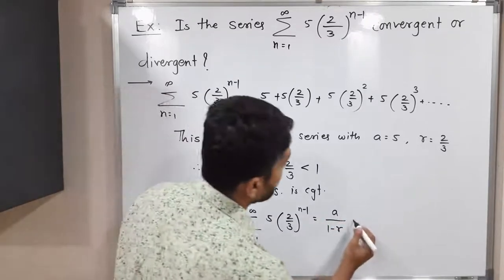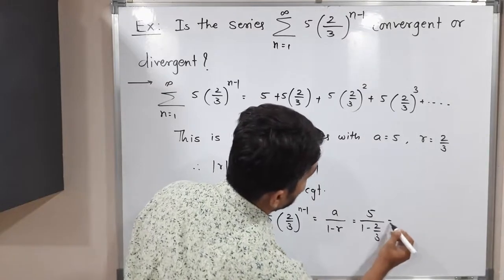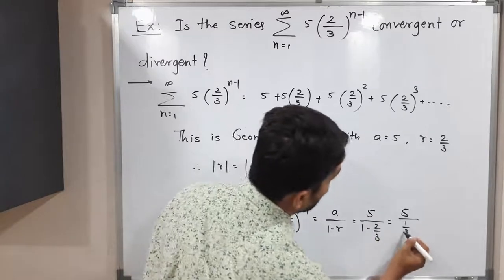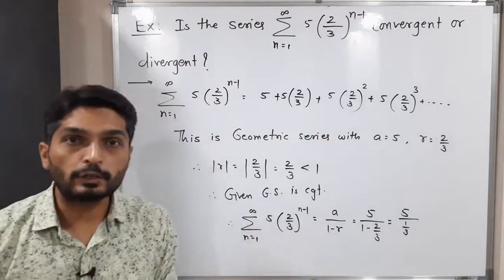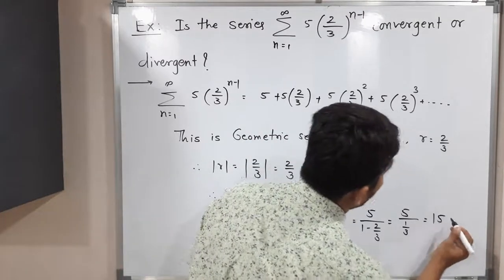Let us find its value. What is our a? It's 5. What is our r? 2 by 3. Let me put it here. 5 upon, you can cross multiply. So we'll have 1 by 3. See that 3 is in denominator of denominator. It will go to the numerator. So that means its value will be 15.